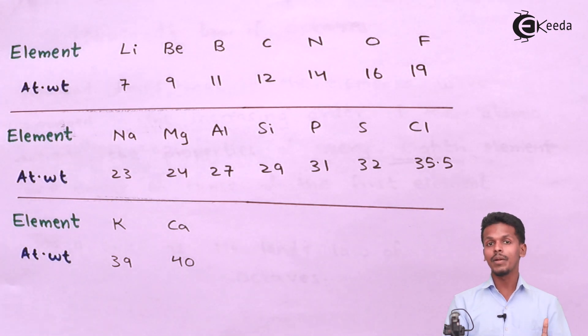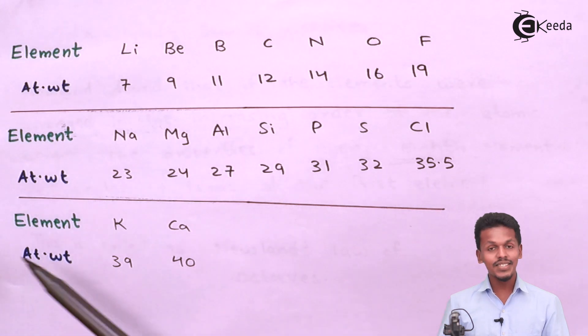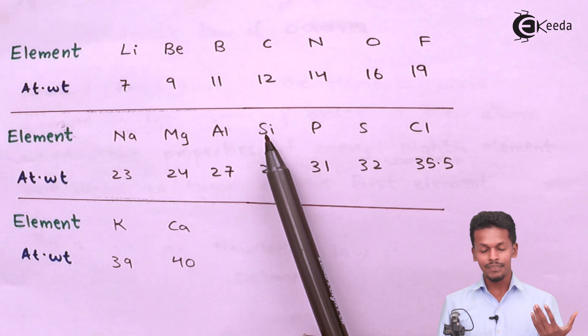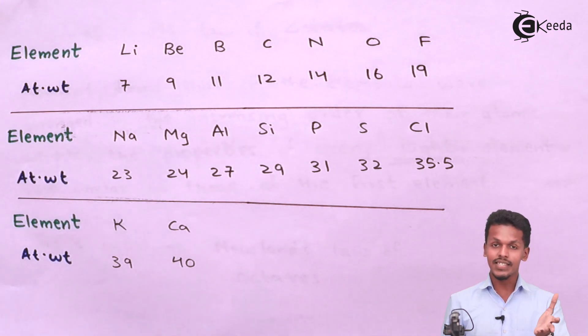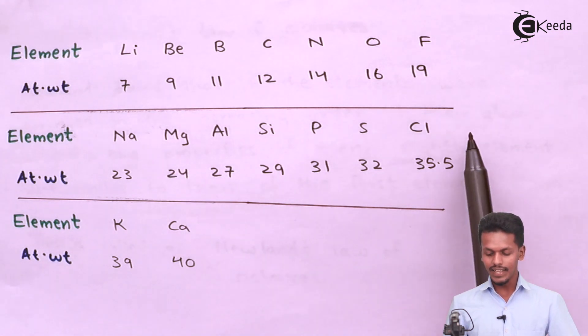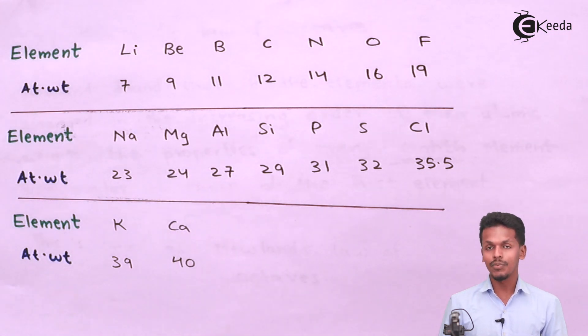The first and eighth elements have similar properties. This is valid up to calcium only. If magnesium is the first element, then the eighth element would be calcium. Therefore, this is valid up till calcium only.